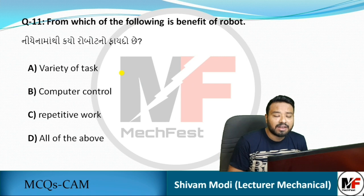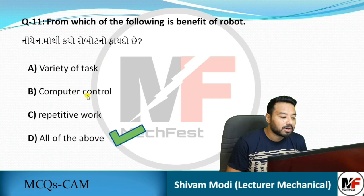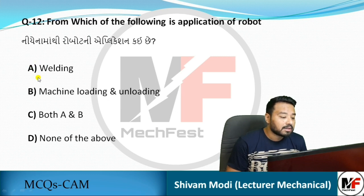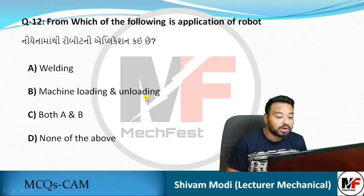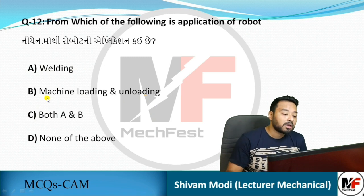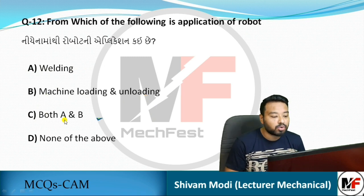Next question: which of the following is a benefit of robots? Options include variety of tasks, computer control, and repetitive work. Next question: which of the following is an application of robots? Options include welding, machine loading and unloading, and car manufacturing. Robots are used for machine loading and unloading, so the answer is both A and B.